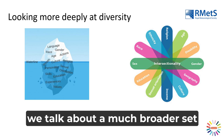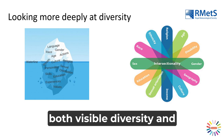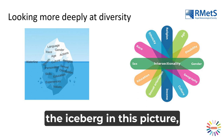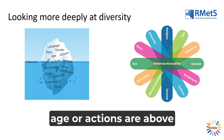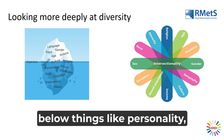Here at the Royal Meteorological Society, when we talk about diversity, we talk about a much broader set of things than those protected under the UK Equality Act 2010. We include both visible diversity and more invisible diversity, represented on the iceberg in this picture. Visible diversity characteristics such as language, race, gender, age or actions are above the waterline, whereas invisible ones are below — things like personality, sexual orientation, skills or education.